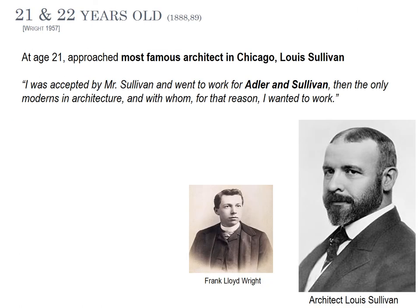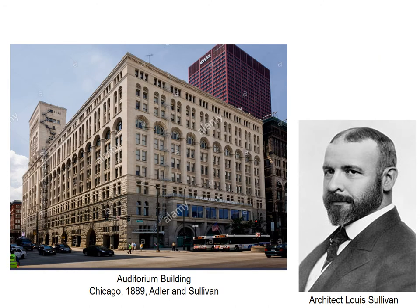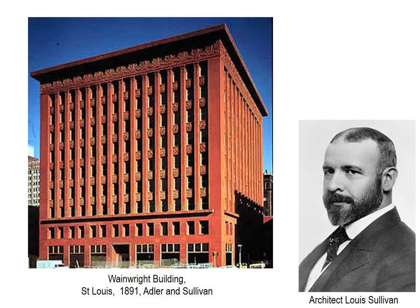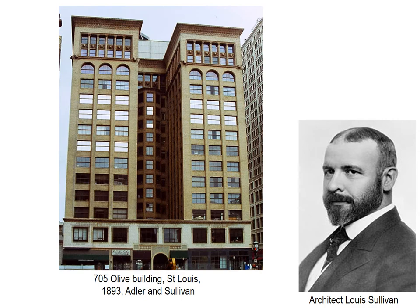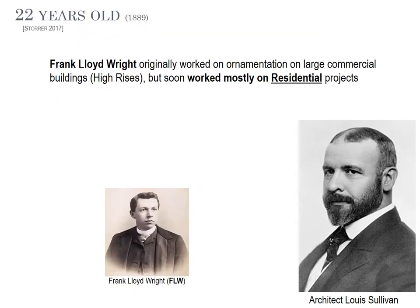Then a very important mentor: he approaches Louis Sullivan, who he really wanted to work with. Louis Sullivan was mostly a commercial versus residential architect — known as the father of high-rises. Notable buildings include the Auditorium building in Chicago, the Wainwright building in St. Louis, 725 Oliver building, and the Guarantee building. Wright worked on some ornamentation on the high-rises but soon worked mostly in residential projects, which was not a big part of the firm, so they let him take that over.